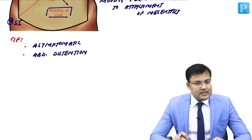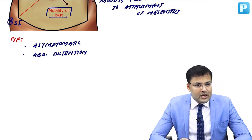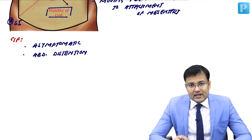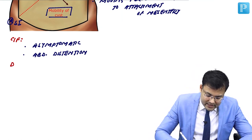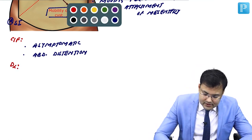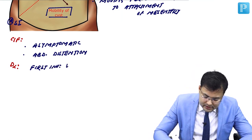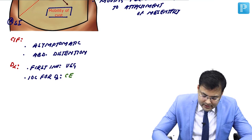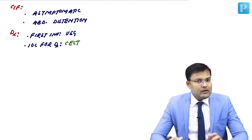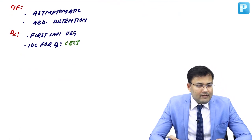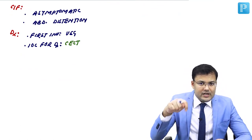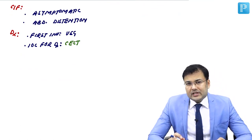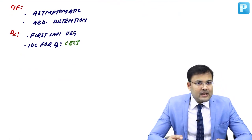What is the first investigation done? It's ultrasound. But what is the investigation of choice for diagnosis? It's CT. So first investigation is ultrasound and investigation of choice for diagnosis is CT. We discussed how treatment is decided: if the patient is having chylo-lymphatic cyst, it's enucleation; and if the patient is having enterogenous cyst, the treatment is resection and anastomosis.